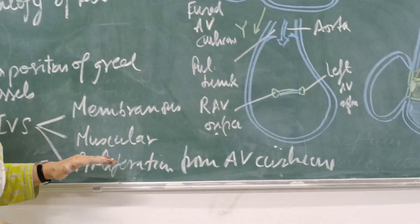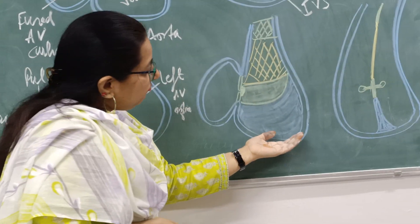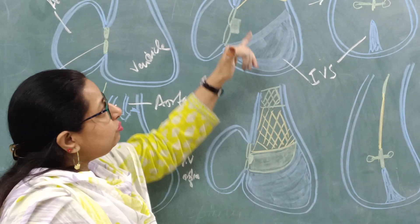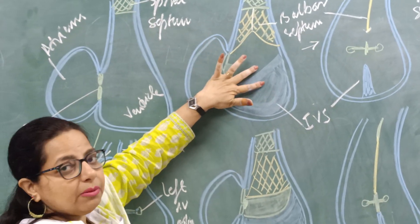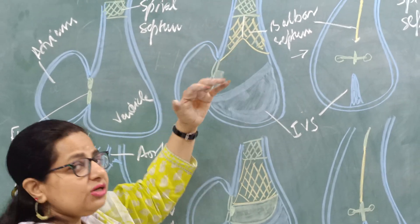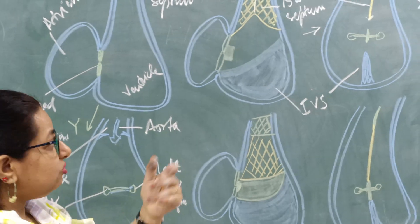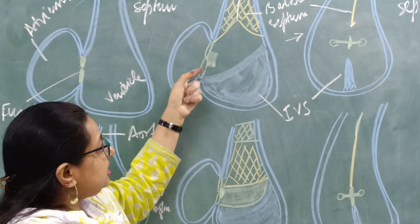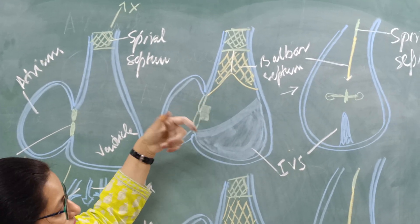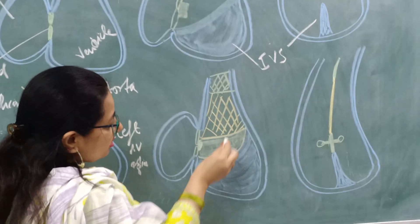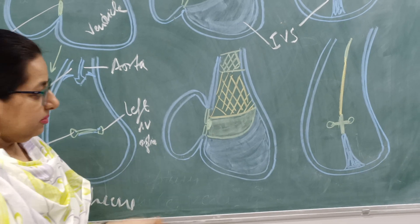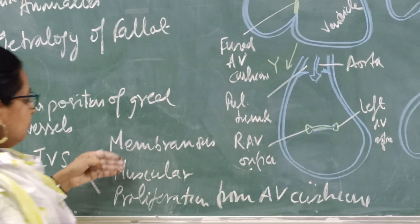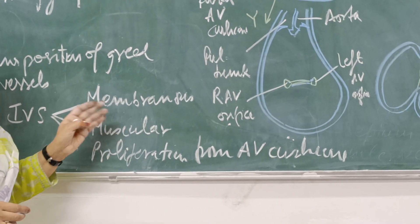The muscular part comes from the floor of the primitive ventricular chamber. The floor gives rise to the muscular portion of the interventricular septum, which grows upwards and tries to fuse with the bulbar septum, which is growing down. These two do not fuse with each other — a gap is left between them. This gap has to be filled by the proliferation from the AV cushions. From the fused AV cushions, proliferation of tissue takes place that fills the gap between the bulbar septum and the muscular portion of the interventricular septum, whereby the complete interventricular septum is formed comprising of the membranous part, muscular part, and the proliferation from the AV cushions.